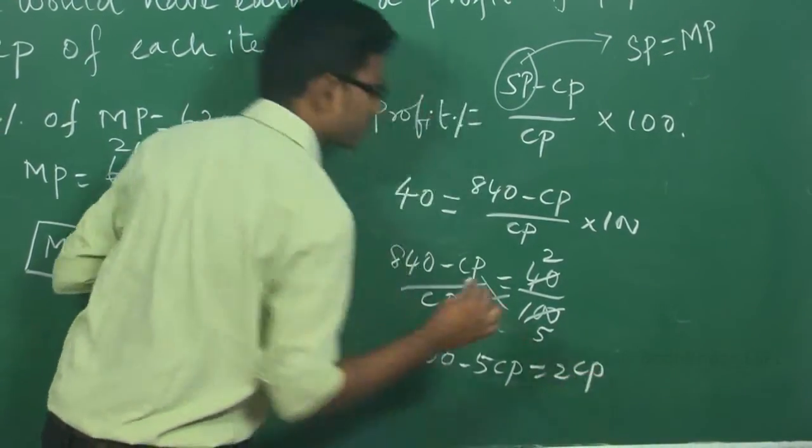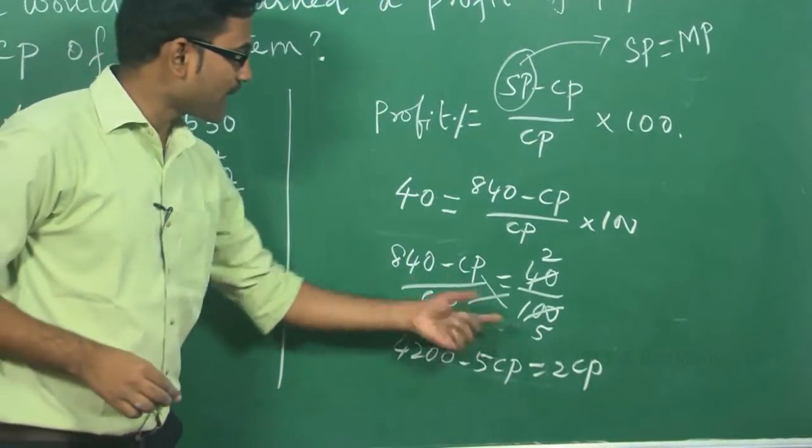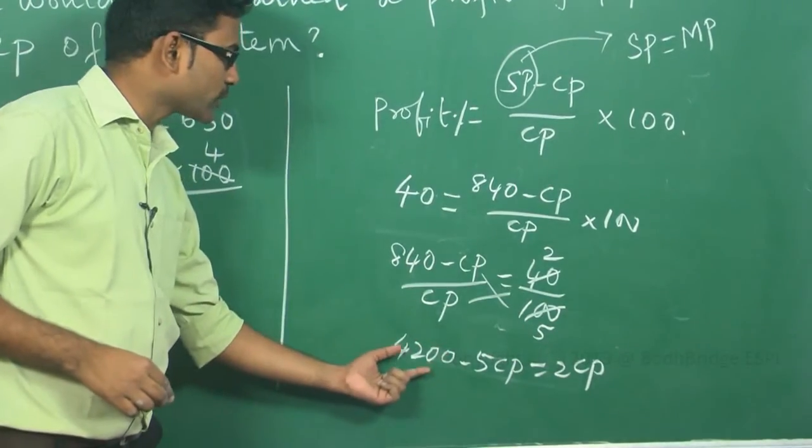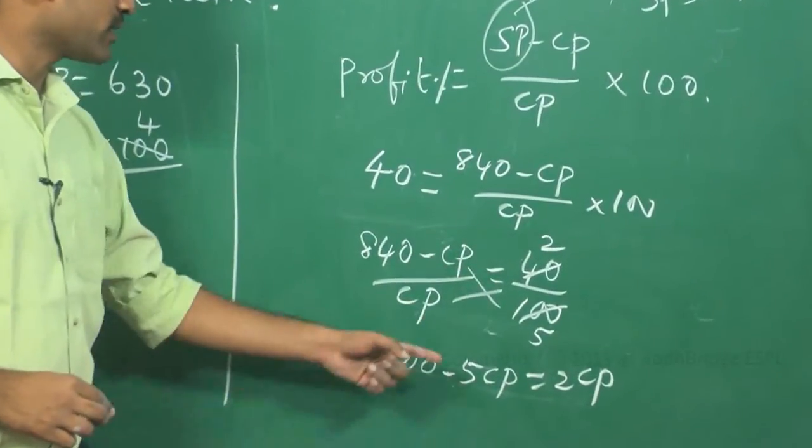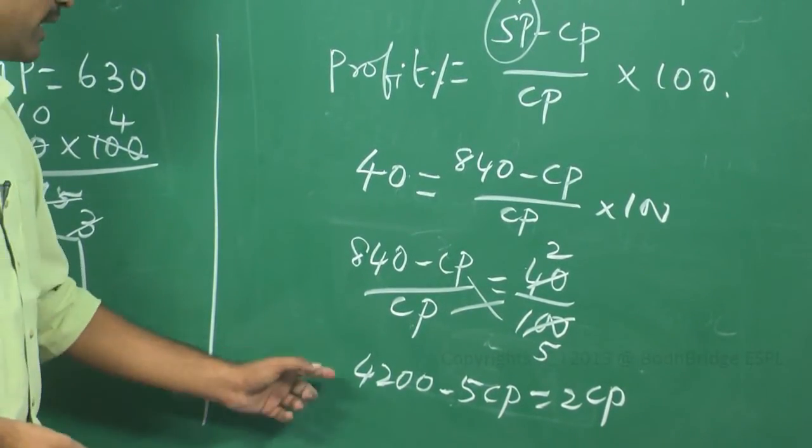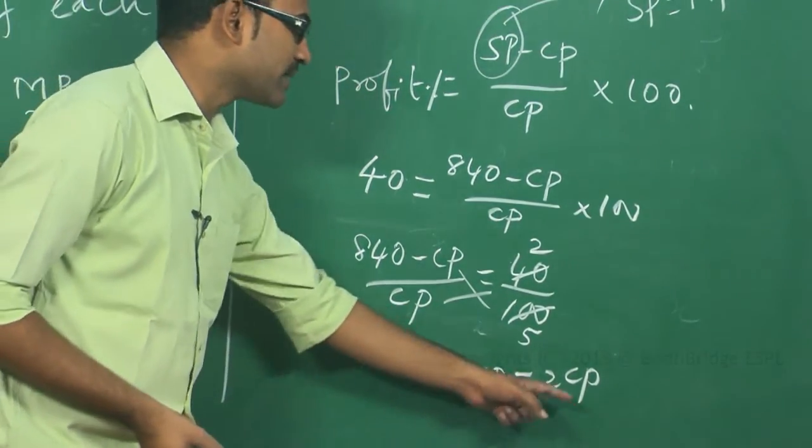to 2CP. Cross multiplying, 840 into 5, 4200. CP into 5, 5CP. This cross multiplication, I will get 2CP. Then, if minus 5CP comes this side,